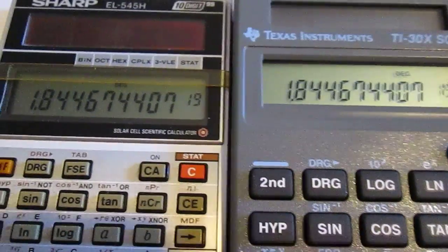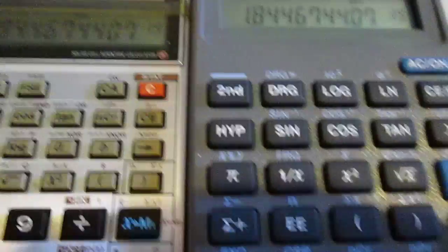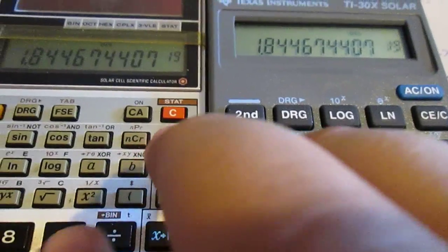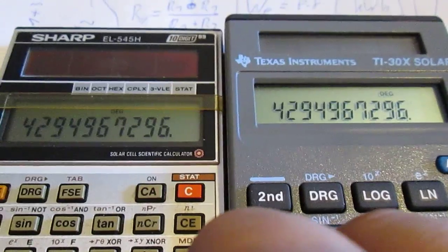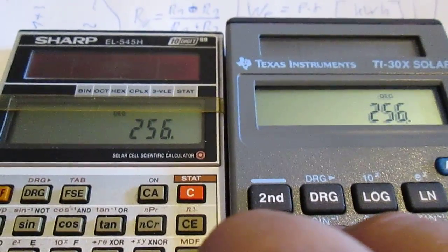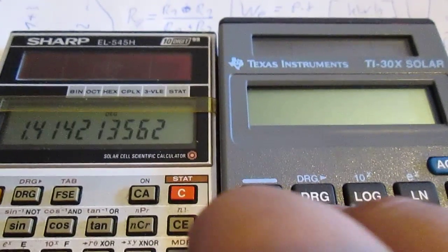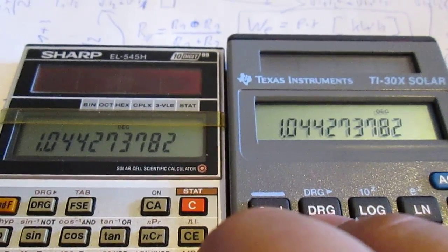So we also can pull a root of these numbers. Here we see that the Sharp is faster. Of course, this is possible once more.